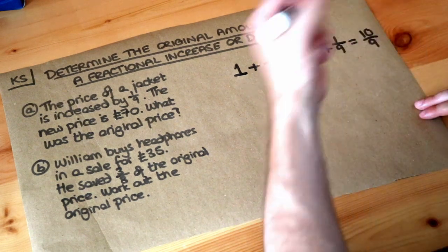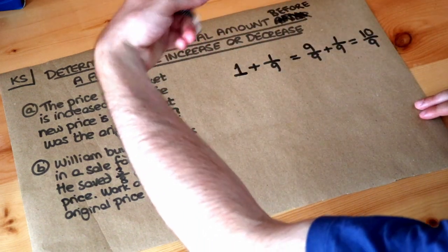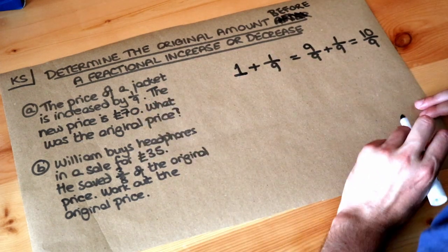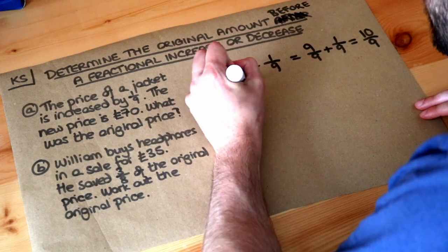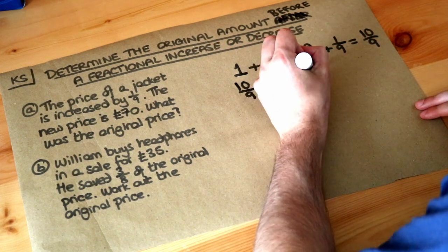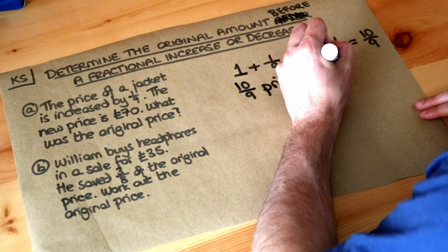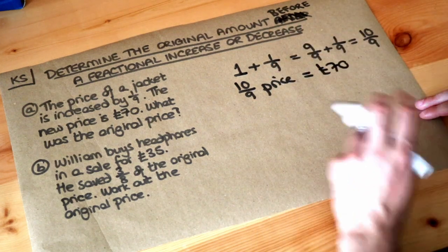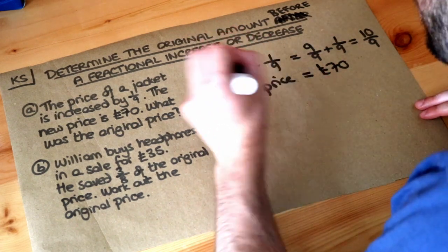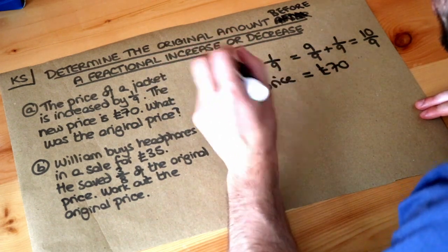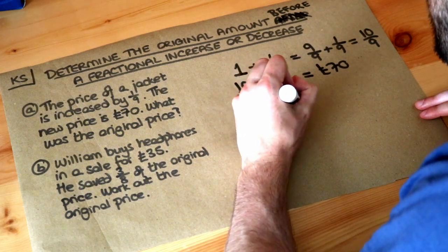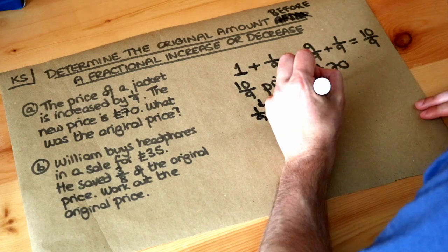Ten ninths is slightly more than a whole, so slightly more than a whole of the original price of the jacket is £70. We say ten ninths of the original price equals £70. Then we work our way backwards to find the original price, which is just a whole of it. To get from ten ninths to a whole, we first find one ninth of the price, getting the numerator to be one.